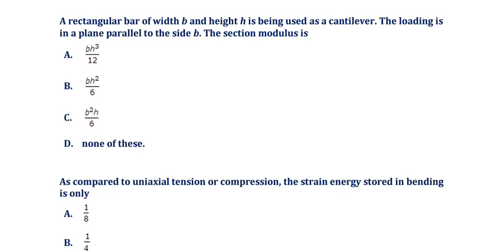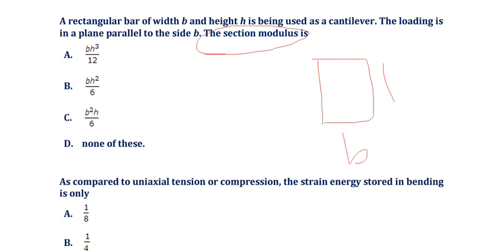A rectangular bar of width B and height H is being used as a cantilever. The loading is in a plane parallel to the side B. In this question they are asking about the section modulus. The rectangular bar of width B and height H is used as a cantilever, and the loading is parallel to the side B.